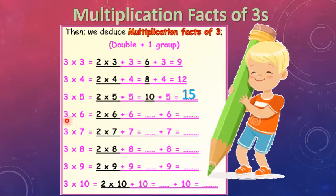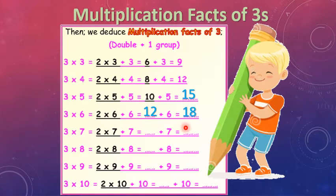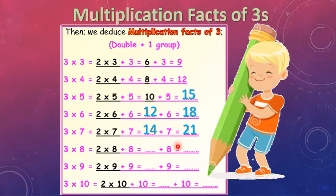For 3 × 6, it means 3 groups, each group has 6 elements. Double these groups and add 1 group: 2 × 6 plus 6. 2 × 6 equals 12, plus 6 equals 18. For 3 × 7, it means 3 groups, each group has 7 elements. Double these groups and add 1 more group: 2 × 7 equals 14, plus 7 equals 21.